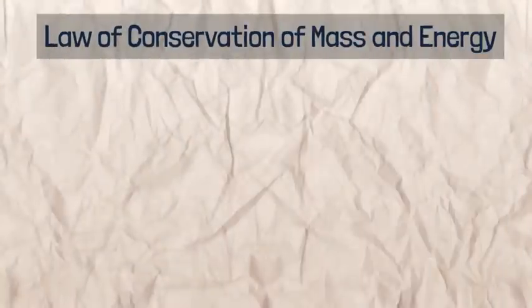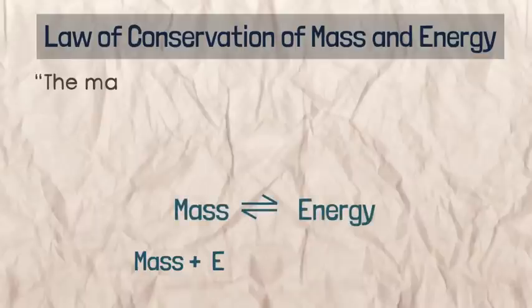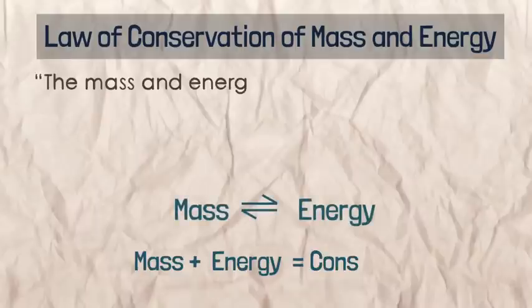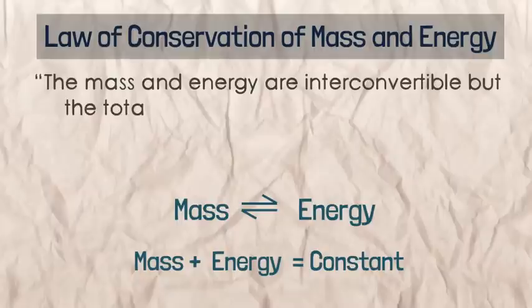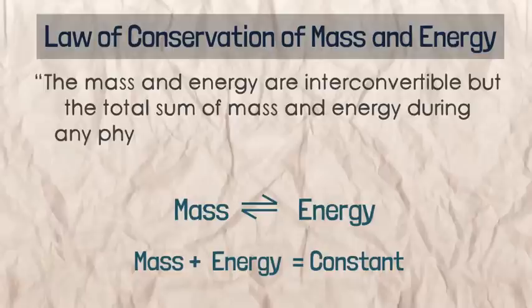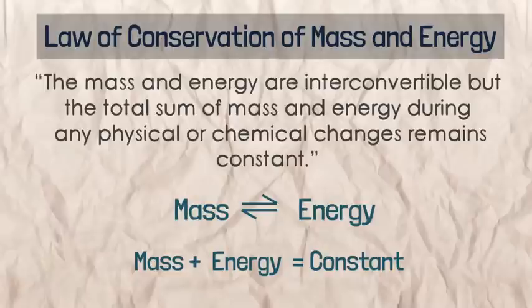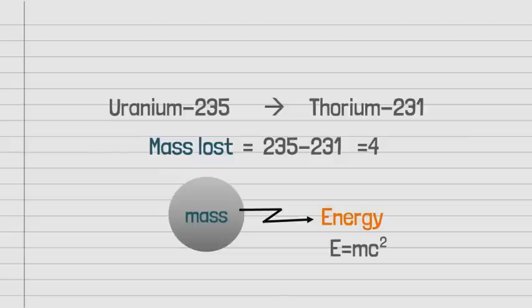Therefore, the law of conservation of mass is now called the law of conservation of mass and energy. According to it, mass and energy are interconvertible, but the total sum of mass and energy during any physical or chemical change remains constant. In the uranium example, mass converts to energy, and their sum stays constant.